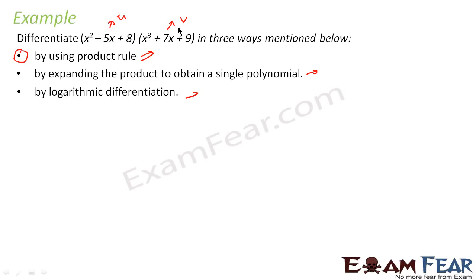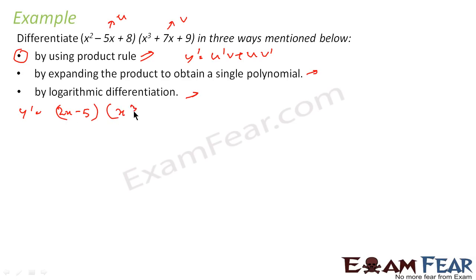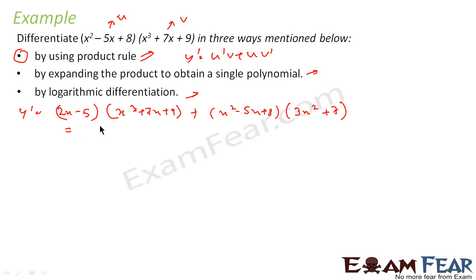For the product rule: u = (x²−5x+8), v = (x³+7x+9). So y' = u'v + uv'. u' is 2x−5, times (x³+7x+9), plus (x²−5x+8) times v', where v' = 3x²+7. If you solve this, you get 5x⁴ − 20x³ + 45x² − 52x + 11. That is the derivative using the product rule.